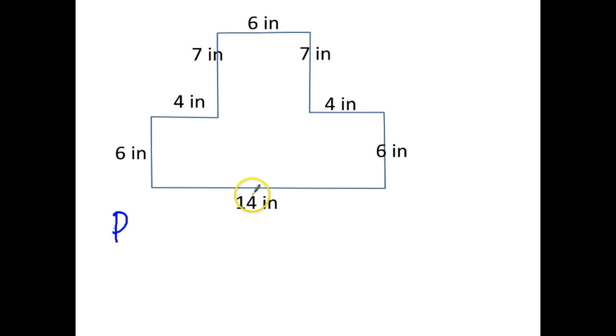Here we go for perimeter first. 14 plus 6 is 20. 4 and 7 is 11. Take this other 4 and 7 as another 11. And 6 and 6 is 12. Add them up. 54 inches for my perimeter.